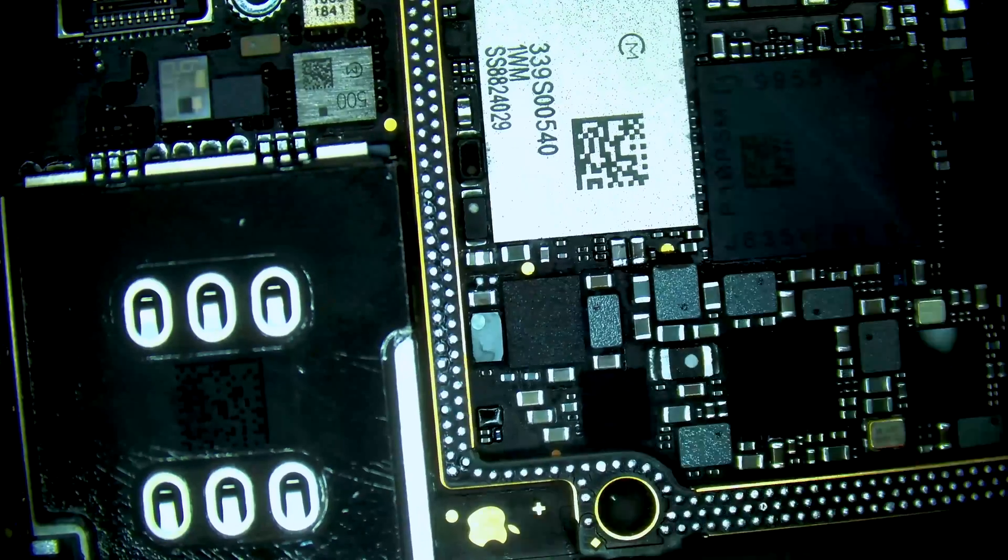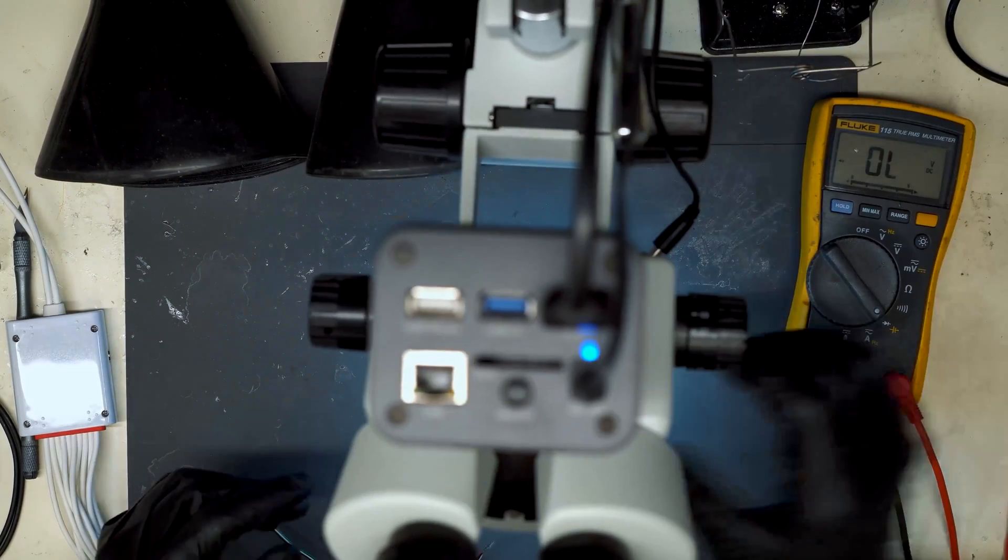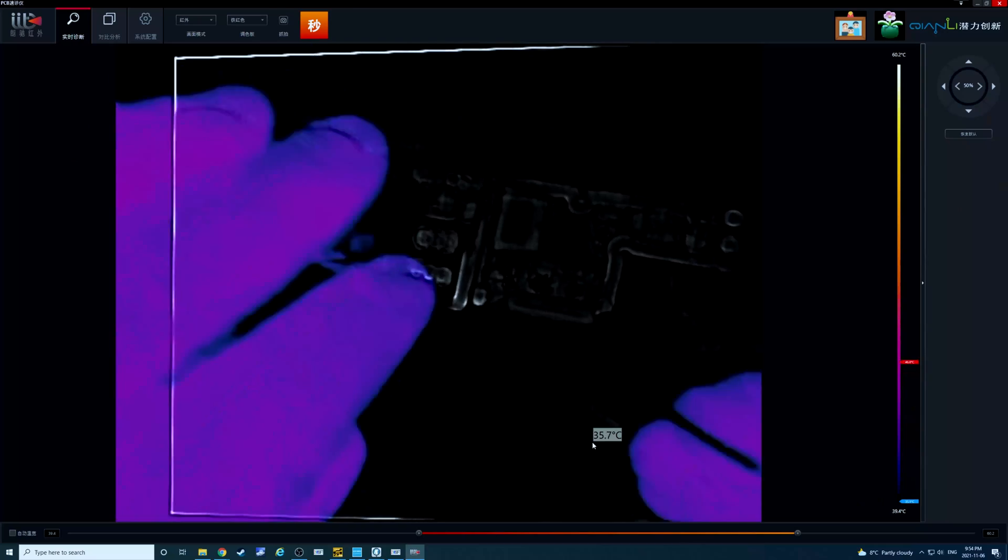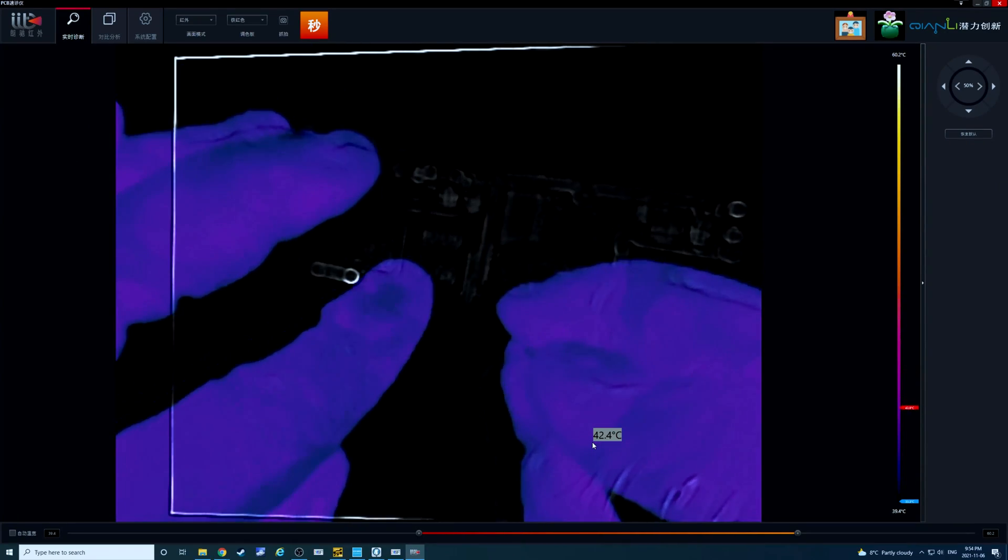So let's go ahead and inject a voltage and also switch to the microscope view and install jumper line. All right, we have our jumper line connected. Injecting voltage now.